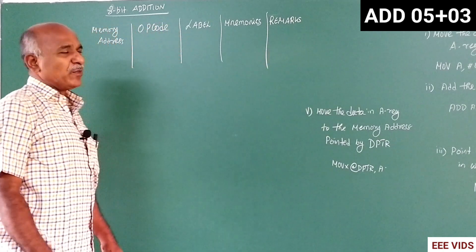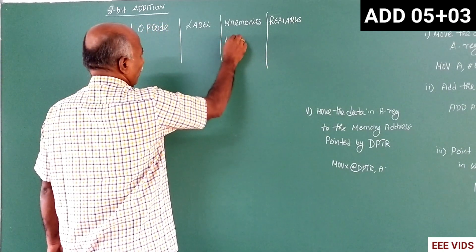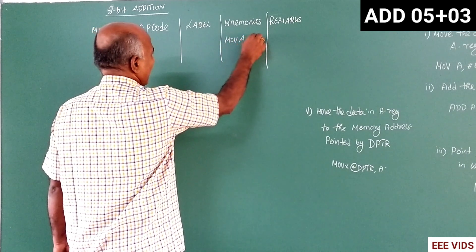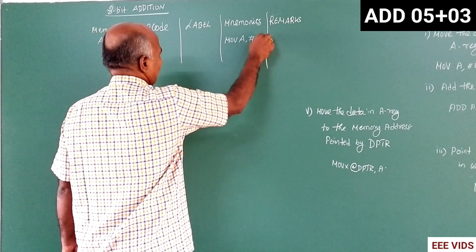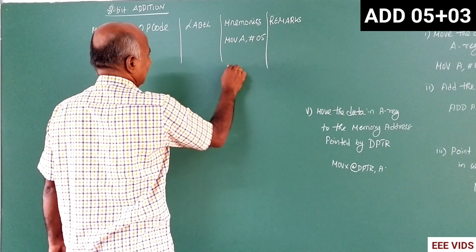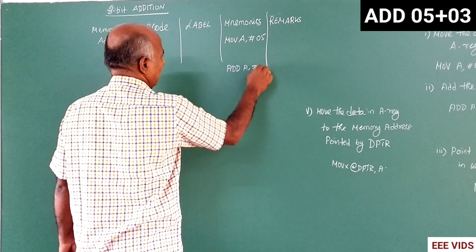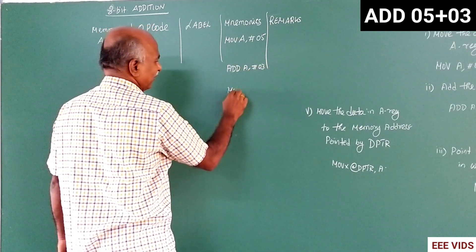We will know the mnemonics. We will copy the mnemonics. MOV A, immediate 05. ADD instruction, ADD A, 03. ADD instruction mnemonics.